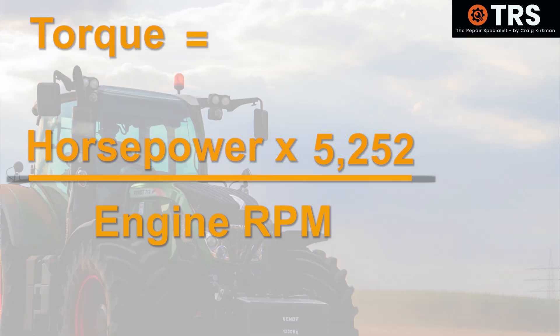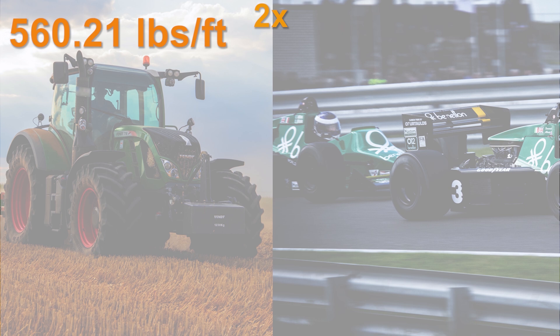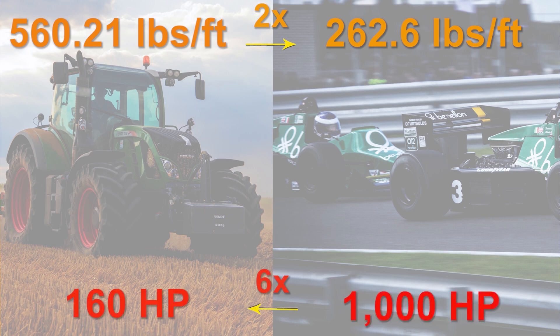Now let's look at the tractor engine. With its 160 horsepower, times 5,252, divided by 1,500 RPM, we get a staggering 560.21 pounds-feet of torque. That's more than twice the amount of torque that the racing car engine produces, despite the fact that the racing car engine has more than six times the horsepower of the tractor.